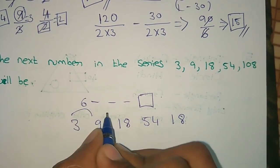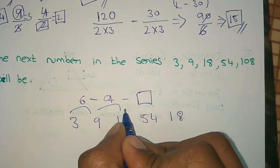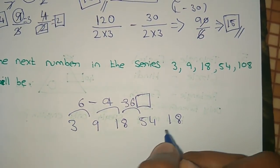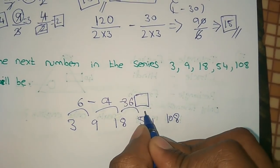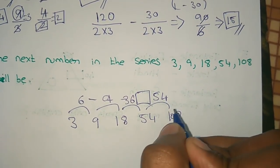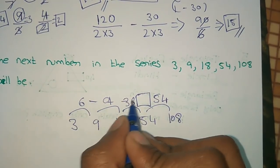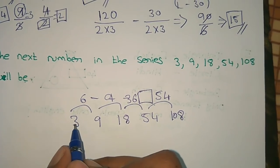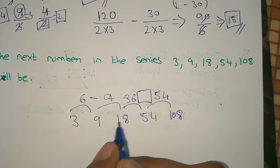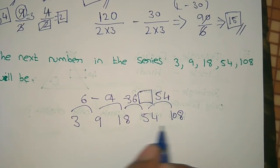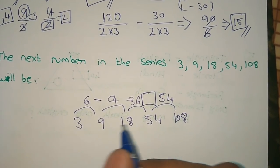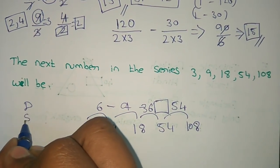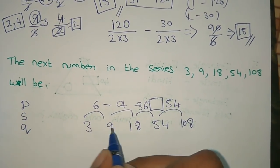There is a difference. Here the differences are 6, 9, 36, 54. There is no consistent arithmetic difference. It is not a square number pattern, and it is not a cube number pattern either. So let's check the multiplication pattern instead of addition and subtraction.